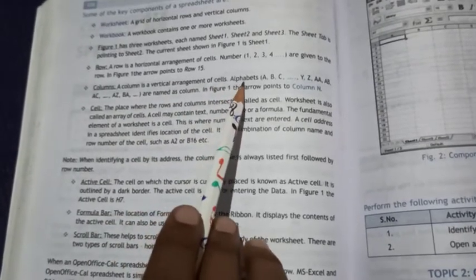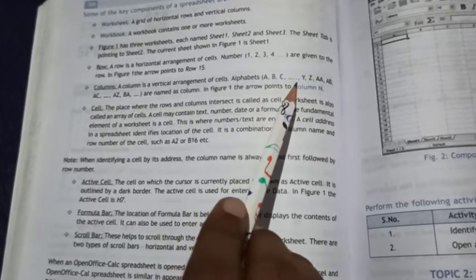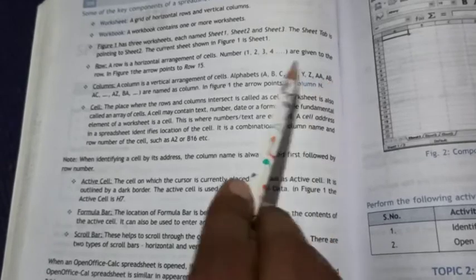Column: A column is the vertical arrangement of cells. It is named with alphabets A, B, C, D, up to Z. After Z, it continues as AA, AB, AC, and so on.